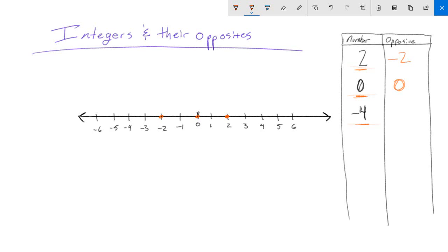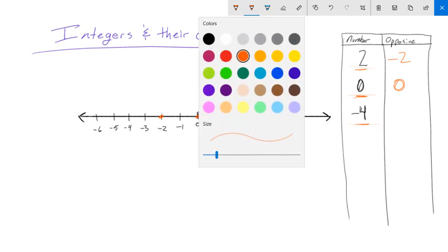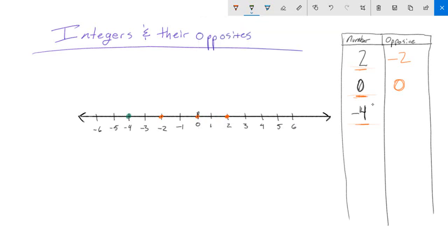Then our last one here, negative four. I'll switch colors for this one. Negative four is down here. So what number is the same distance from zero but on the other side? So negative four, a good way to think of it is, okay, well, four is four units from zero. So I'm going to go to the other side now and go, okay, well, if I keep going down here, four units from zero is positive four.